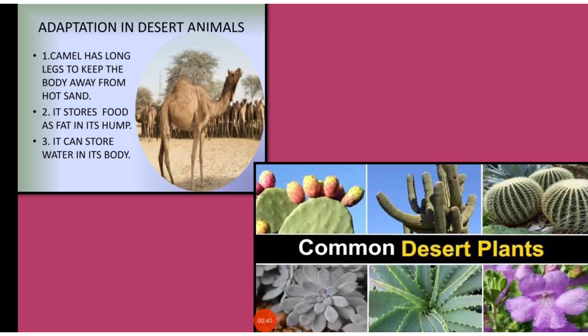The body structure of the camel helps it to survive in desert conditions. Camels have long legs which help to keep their bodies away from the heat of the sand. They secrete very small amounts of urine, lose very little water from their bodies, and can live for many days without water.